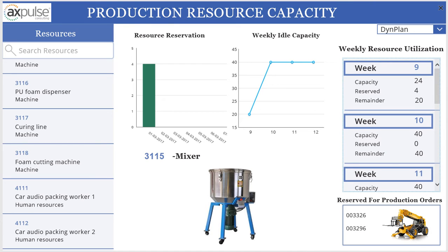At the bottom, you can see a list of all the production orders where this particular resource has been reserved. For this example, we have two production orders where this resource is reserved in AX2012. Using this quick view, users can find out what capacity is available, what has been reserved, and which production orders it has been reserved for.